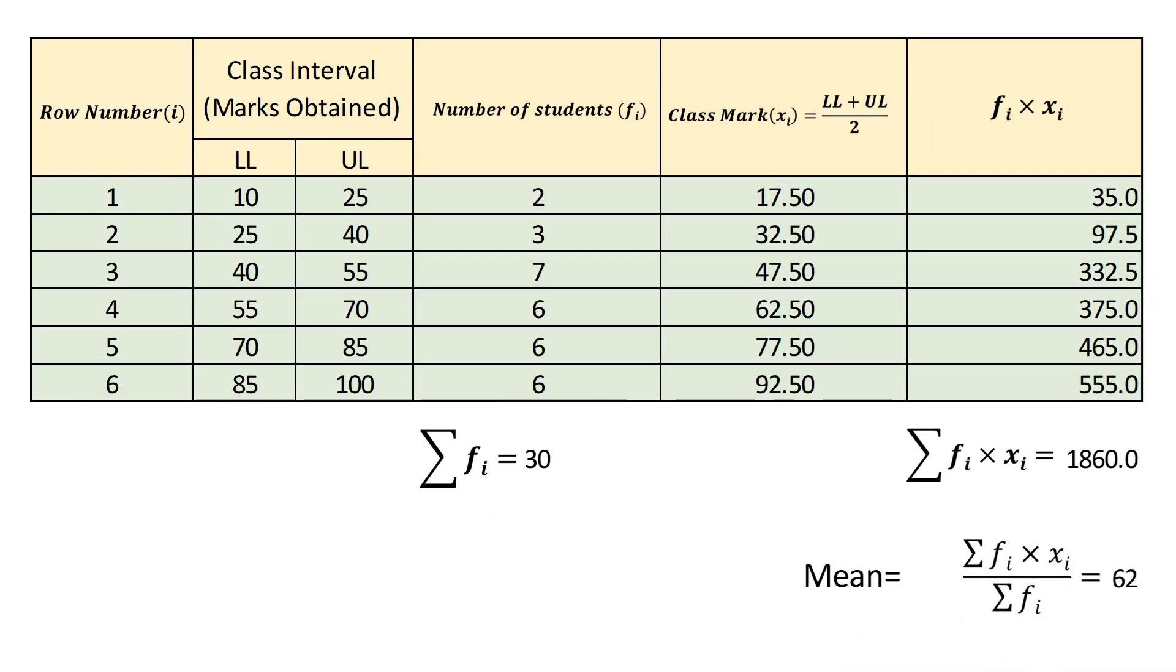Before using assumed mean method, I would like to introduce direct method to find mean in which you calculate class mark by taking average of upper and lower limit of class intervals. Further, you take product of class mark and corresponding frequencies. Finally, you add them up and divide by sum of frequencies to get the value of mean. In this case, value of mean is 62.